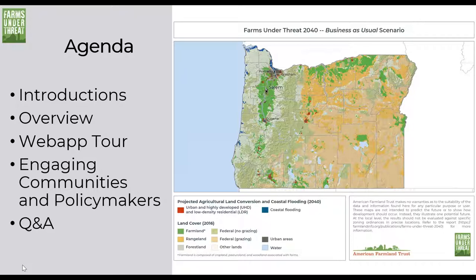As we get into the website section of our webinar today, if you can't see the maps, try minimizing the control panel using that orange arrow at the top. Let me introduce myself and my co-host. I am Chris Coffin. I direct AFT's National Agricultural Land Network, which is an information and peer learning network for professionals and community advocates working to save farm and ranch land. I am also AFT's Senior Policy Advisor, specializing in farmland protection, land access, and farm viability.